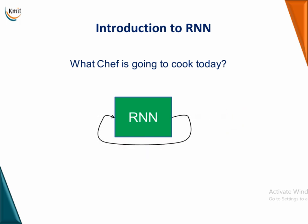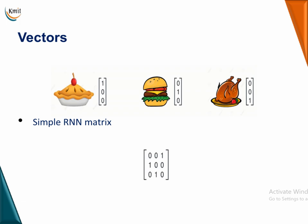The previous output is fed back to get the new prediction — that's the entire principle of RNN. Technically, the three items in the sequence are represented as unit vectors: apple pie as [1,0,0], burger as [0,1,0], and chicken as [0,0,1]. These are combined into an RNN matrix: [0,1,0 / 0,0,1 / 1,0,0], where you combine the entire sequence vectors.